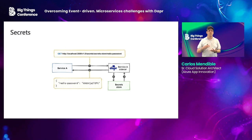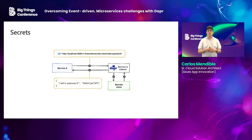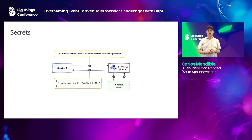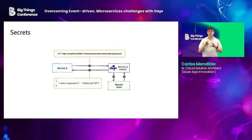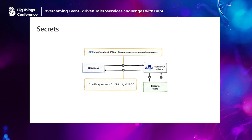For secrets, you can use Dapr to talk with Azure Key Vault, Secret Manager from GCP or AWS, or even HashiCorp Vault without any issues — just by making a simple GET call to your Dapr sidecar. You call the secrets API, give it the name of the secret store — which could be your key vault instance — and the name of the secret or key you want to read, and it returns the payload as JSON. You can also do this with the Dapr SDK for your language of choice.